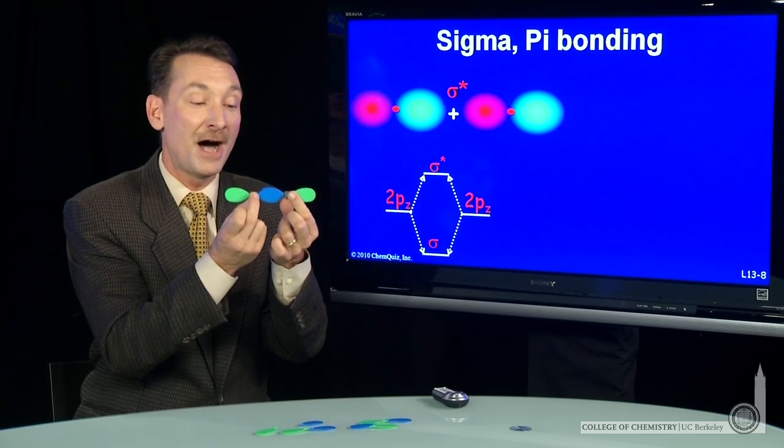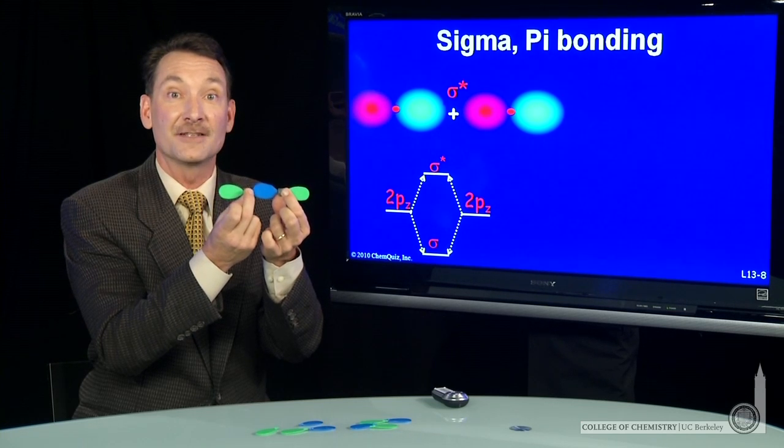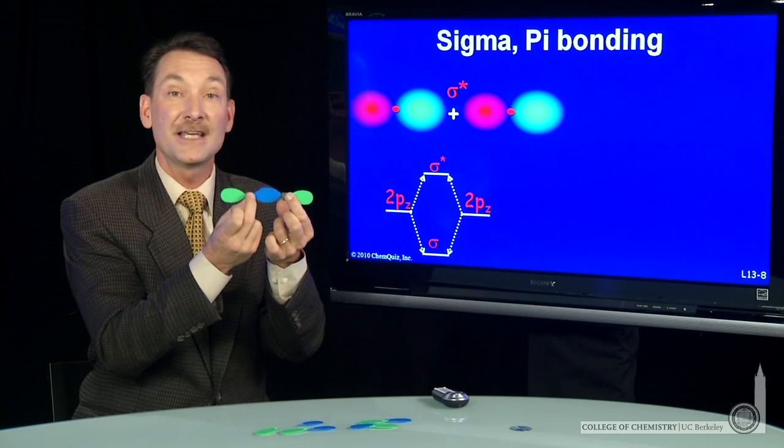And I call this a sigma bonding interaction because the electron density is along the internuclear axis. That'll be my definition of sigma orbitals.